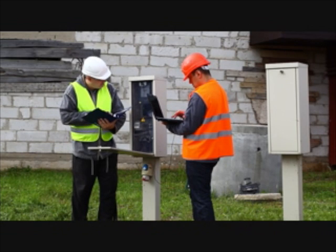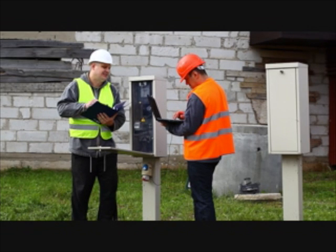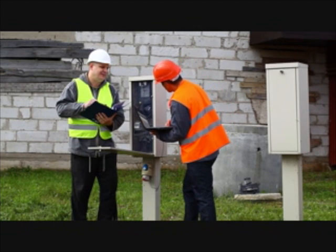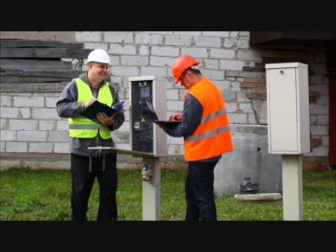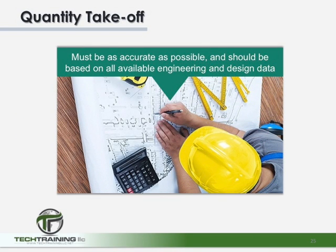Unlike vertical construction where a plan is put into place and can in most cases be executed, horizontal construction is different. Here engineers are constantly getting feedback on possible site condition changes as the project progresses. Items such as the volume of stripping, whether or not we're excavating rock, embankment materials, waste, or soil excavation have to all be considered as the project continues. This is what's known as the quantity survey or quantity takeoff.